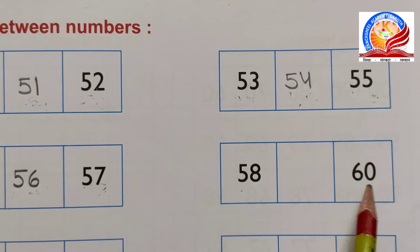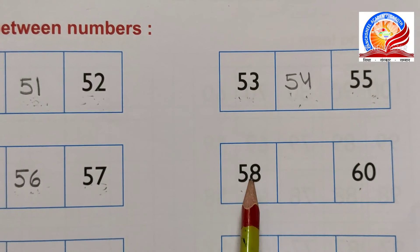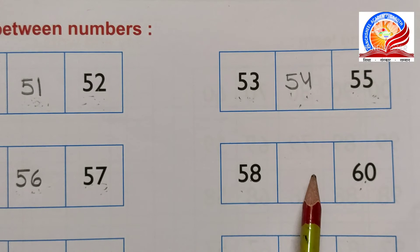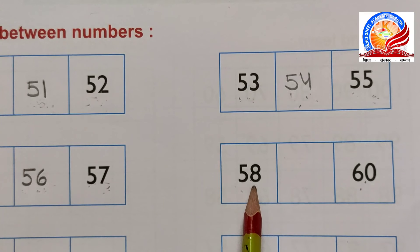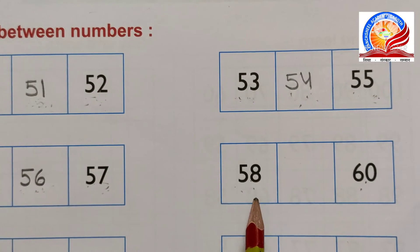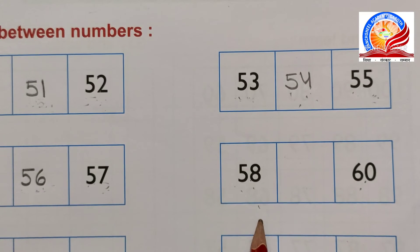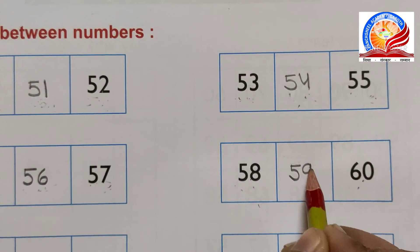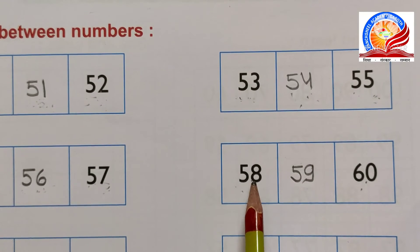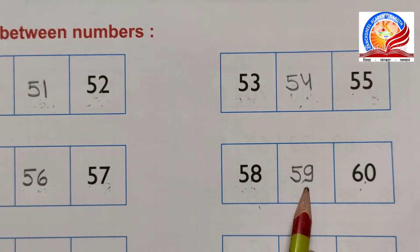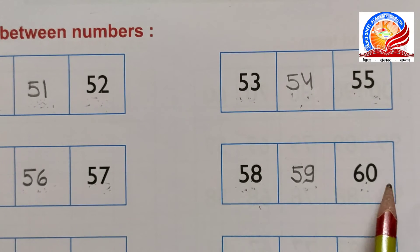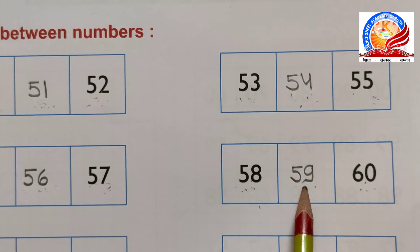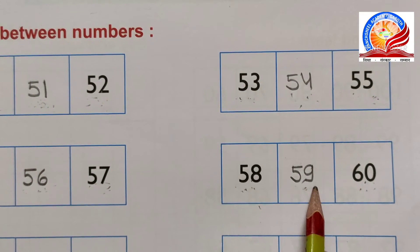Next, 58 and 60. 58 aur 60 ke beech mein kaun sa number aayega? Boliey: 58 and 59. Kaun sa number aayega? 58, 59 and 60. 59 is between 58 and 60. 59 - 58 aur 60 ka between number hai.